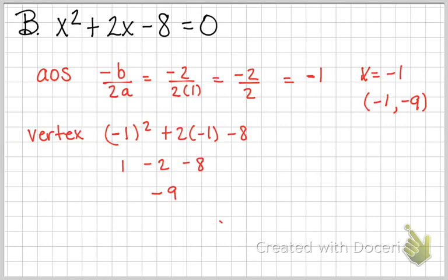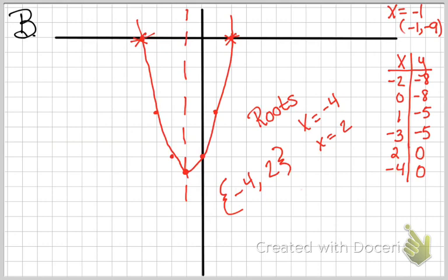Here we found our AOS and our vertex, -1 and (-1, -9). When you graph it, when you start with your AOS and graph it, you may have to go a little extra. Notice that when you put in small numbers right next to it, it doesn't go up very far. So I had to go all the way down to 2 and -4 for it to actually equal 0.